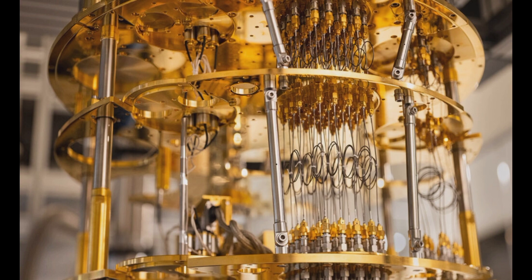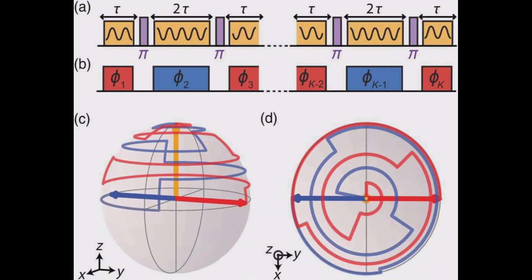In classical computers, data is represented using bits, which are like tiny switches that can be either zero or one. These bits are the building blocks of all the information that a computer processes.